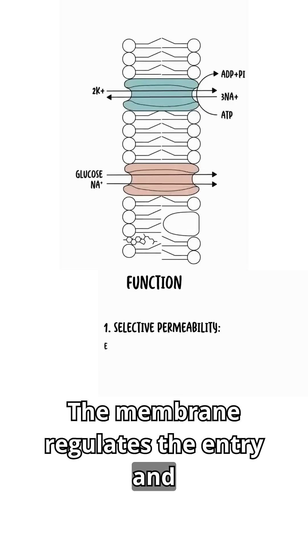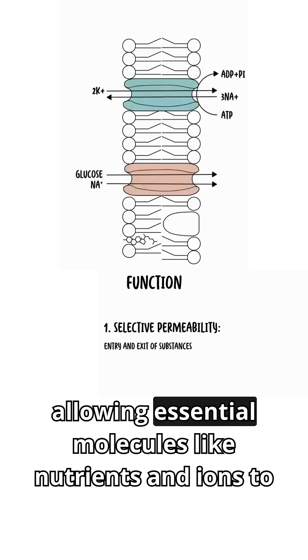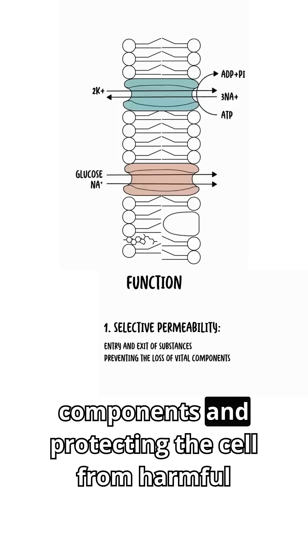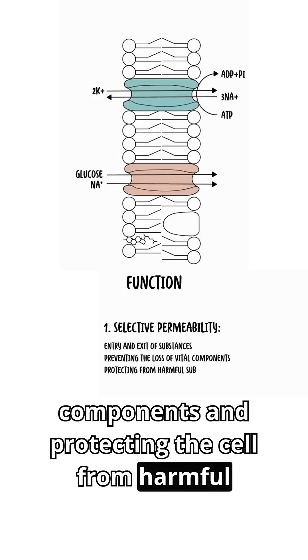The membrane regulates the entry and exit of substances, allowing essential molecules like nutrients and ions to enter while preventing the loss of vital components and protecting the cell from harmful substances.